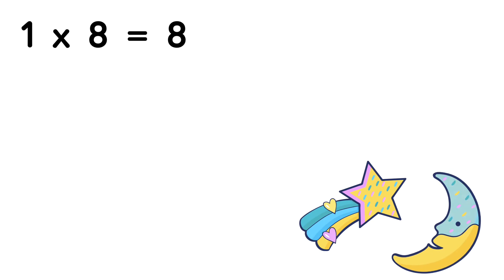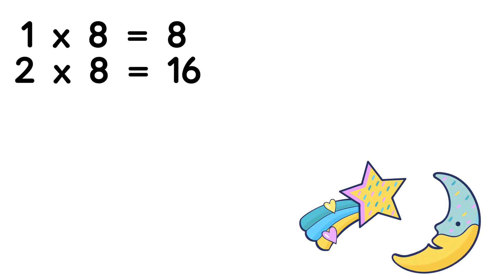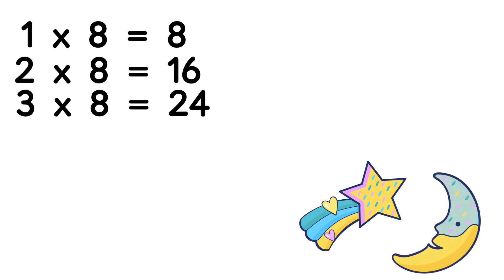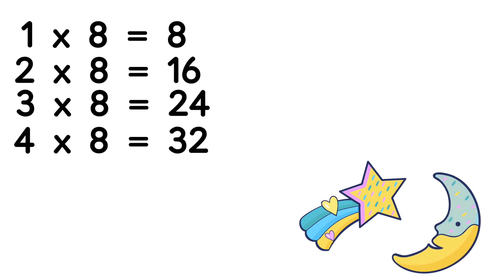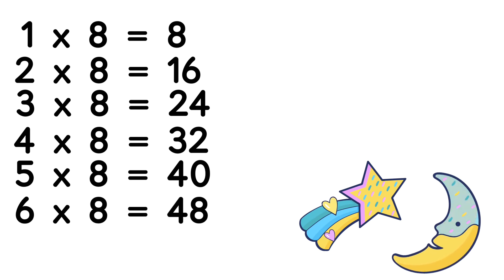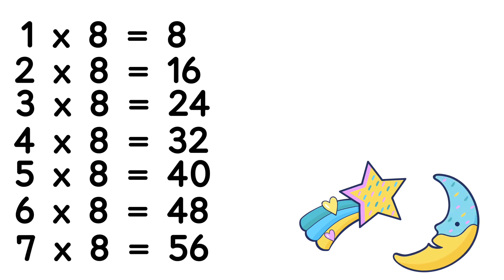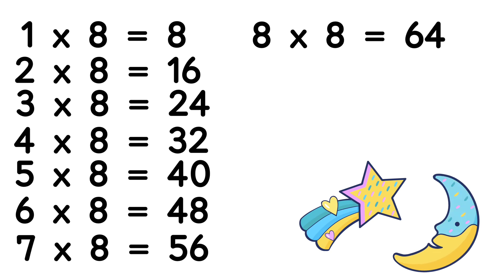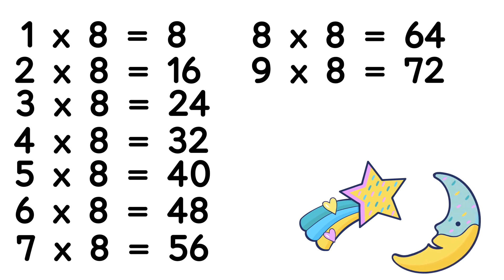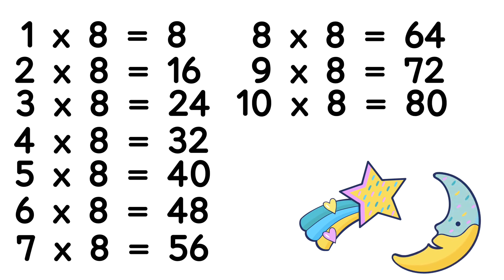Table of 8: 7 eights are 56, 8 eights are 64, 9 eights are 72, 10 eights are 80.